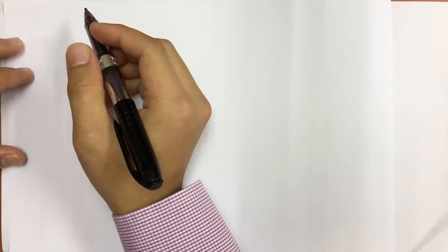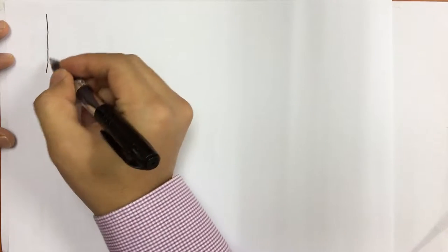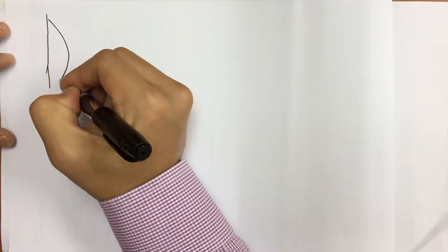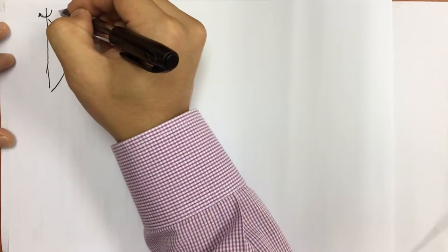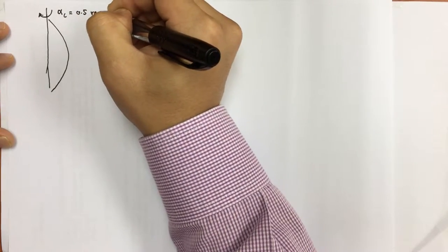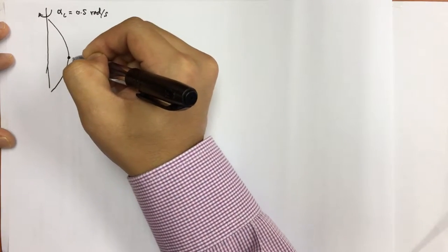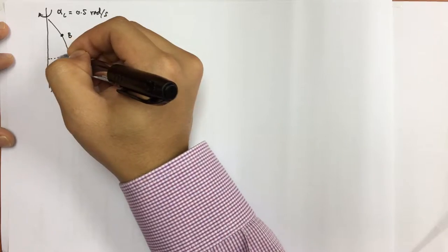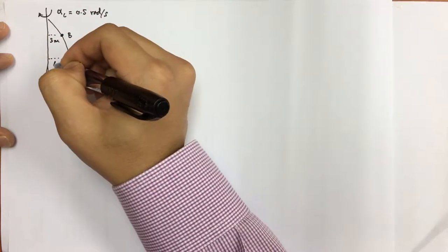In this problem, we understand that if we have different radii, we are going to experience different angular velocity and different angular acceleration. If we put a 2D diagram and we know that this is the angular acceleration, alpha C equals 0.5 radians per second squared, this is point A and this is point B. So this radius is 3 meters and this one is 6 meters.